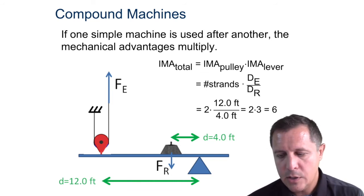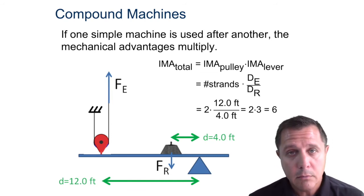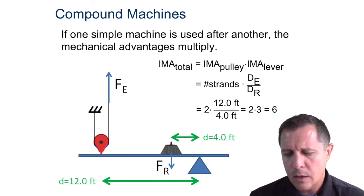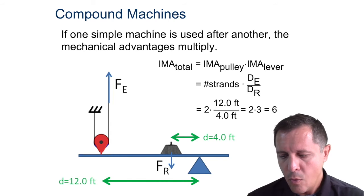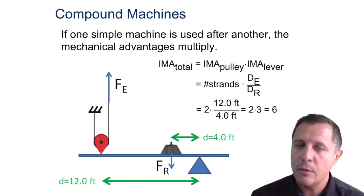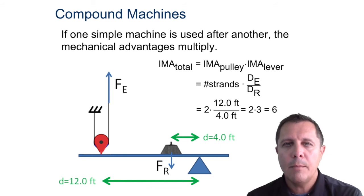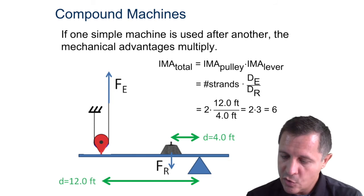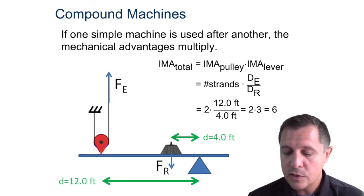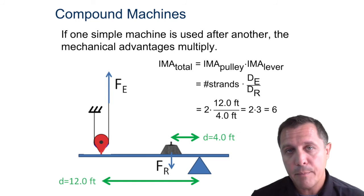Now, compound machines — you take the IMAs of any compound machine and multiply them. In this picture we have a movable pulley and a lever. The effort goes on the outside, so it's a second class lever because the resistance is on the inside. To get the total IMA, multiply the two individual IMAs: the IMA of the pulley is 2, and the IMA of the second class lever is 12 divided by 4, which is 3. So 2 times 3 gives an IMA of 6 for the compound machine.